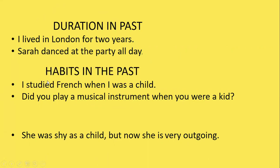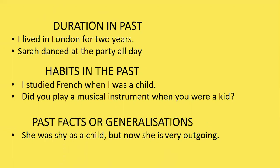The next usage is to talk about habits in the past: 'I studied French when I was a child.' 'Did you play a musical instrument when you were a kid?' Simple past can describe a habit which stopped in the past. It can have the same meaning as 'used to.' To make it clear we are talking about a habit, we often add expressions such as 'always,' 'often,' 'usually,' 'never,' 'when I was a child,' 'when I was younger,' etc.